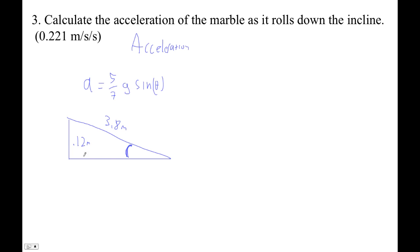Remember, the sine of a triangle is opposite over hypotenuse. So sine of theta is actually just 0.12 over 3.8. And I'm using SOHCAHTOA. Sine of theta is opposite over hypotenuse. That's the SOH of SOHCAHTOA.